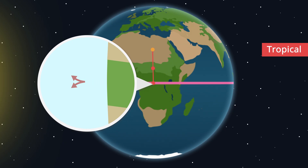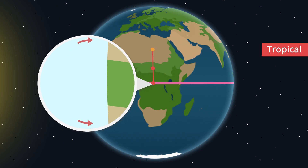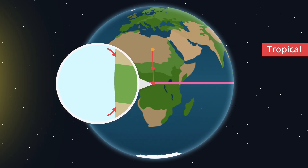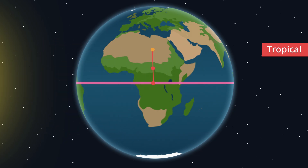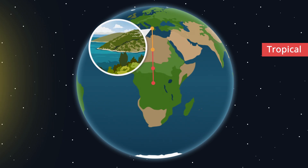When the air has reached a certain height in the atmosphere, it moves south or north instead. After a while it becomes so cool and heavy it starts to sink toward the earth again. Lots of air is pressed to the earth, and high pressure areas are created. The weather becomes dry and warm — such as in the Sahara desert.